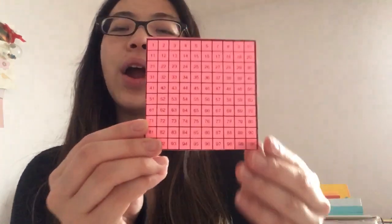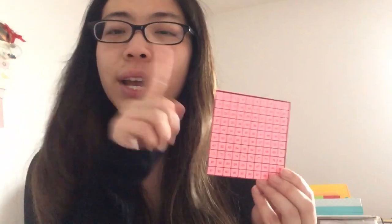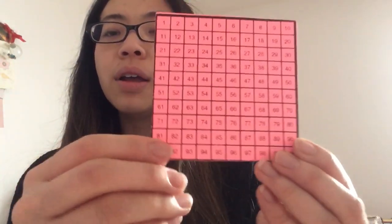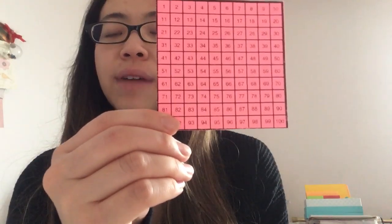Great job! Alright, so now I'm going to pick a random number on my hundredths chart, and we're going to count along. So I want you to find fifty-three on your hundredths chart. Can you point to it?